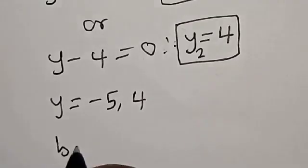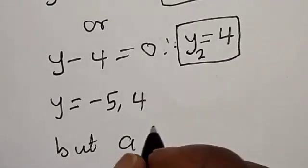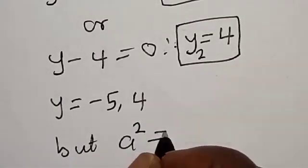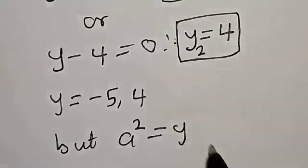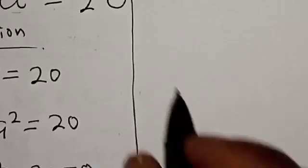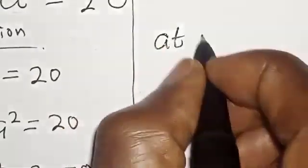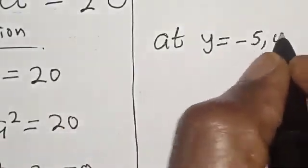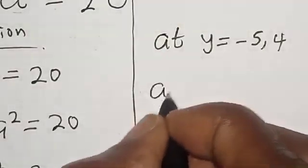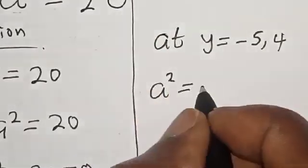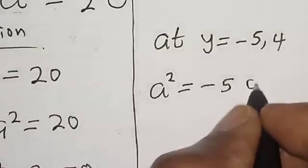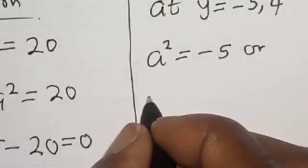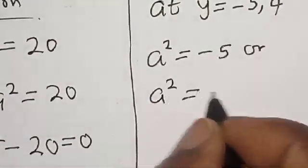But recall that a^2 = y, where y equals -5 or 4. Now a^2 = -5 or a^2 = 4. Let's work with these.